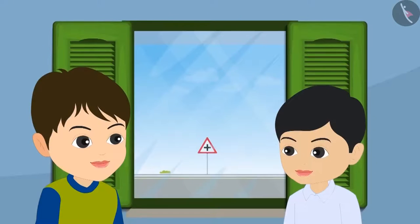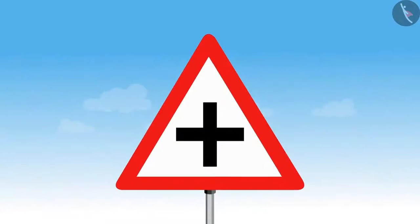'Bholu, did you notice that sign? It has only four angles: one, two, three, and four. All these are similar to a right angle.' 'Yes Dholu, there are four angles here.'